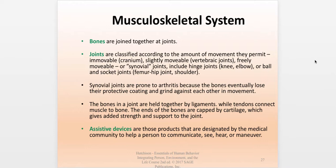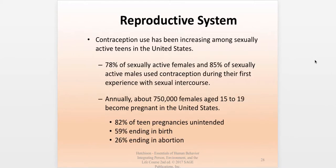Many different assistive devices have been developed by the medical community to help a person communicate, see, hear, or maneuver when the body's own abilities have been compromised. There are drawings in the book for reference on the male and female reproductive organs, but we don't need to go through the biological facts of life here.